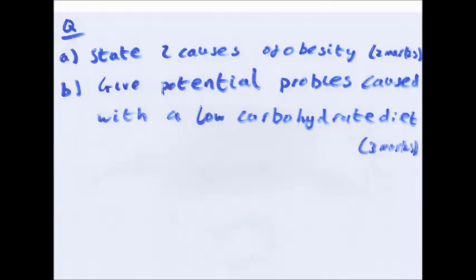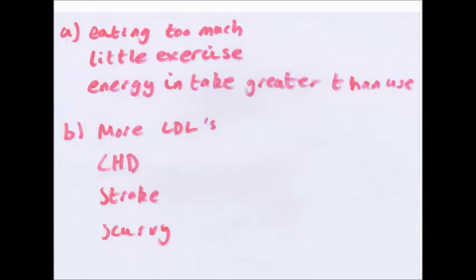Question: state two causes of obesity and give potential problems with a low-carbohydrate diet. Two causes of obesity: eating too much with little exercise — energy intake greater than energy use — and an underactive thyroid gland. For problems with a low-carbohydrate diet: a low-carb diet removes all sugars, including sugars in fruits, so you can get vitamin deficiency problems like scurvy. It also means you won't get the correct amount of high-density lipoproteins, so you get more LDL, cholesterol increases, and this can lead to coronary heart disease and stroke.